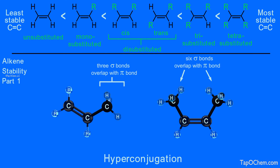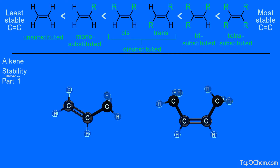This general trend continues through the series, so with each alkyl group added to the carbon-carbon double bond, we see an increase in stabilization. You may have noticed, in the center of the top section, that we have two disubstituted double bonds — specifically cis and trans disubstituted alkenes. Do they have the same stability? No. The cis compound is less stable than the trans compound, so let's place a less-than sign between these two structures. The reason for this difference in stability is due to steric hindrance, making the cis alkene less stable.